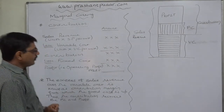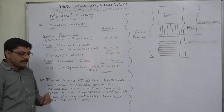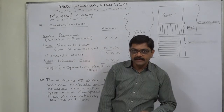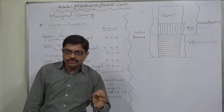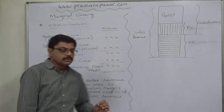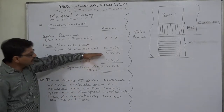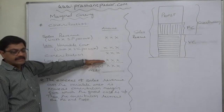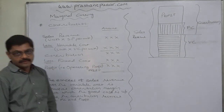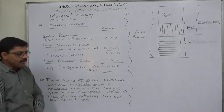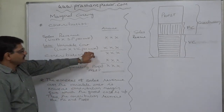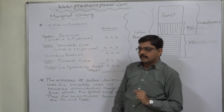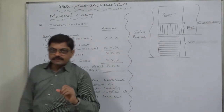At the time of price determination, we always have to consider the golden rule: the price should be sufficient to earn that much contribution which is sufficient to recover fixed cost as well as earn profit. So at the time of price determination, contribution becomes the critical concept. Not only that, in many specific types of decision-making situations, contribution is also a very important concept.